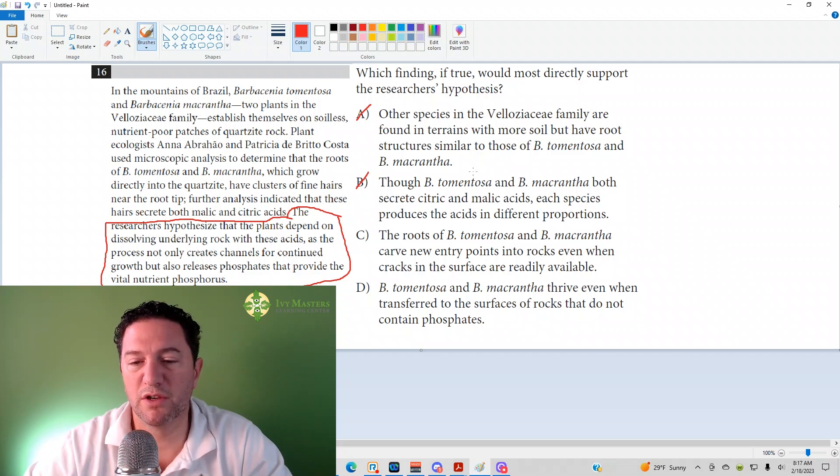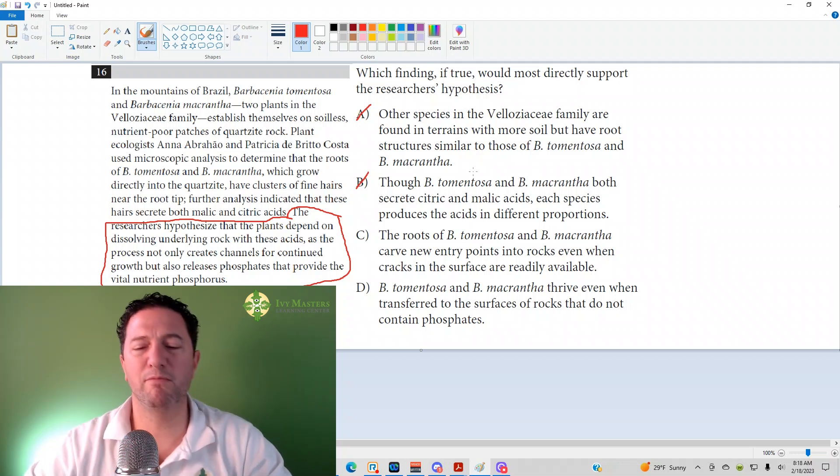Answer choice C. The roots of B. tomentosa and B. macrantha carve new entry points into rocks, even when cracks in the surface are readily available.